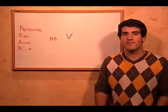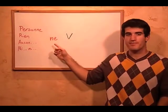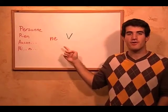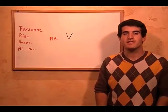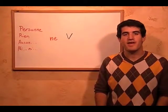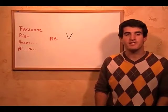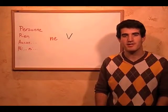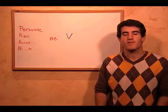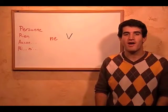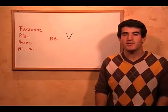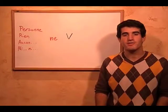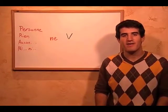These are then followed by ne and the verb. This is the basic outline of sentences that have one of these negative words as a subject. We can, of course, have other things within the sentence, like direct objects, indirect objects, pronouns, etc., but this is the basic outline of how that works.